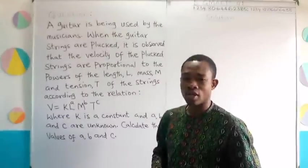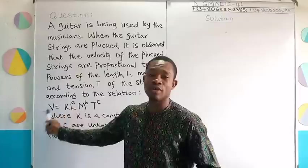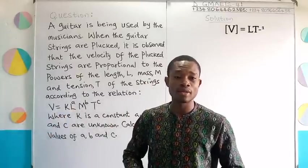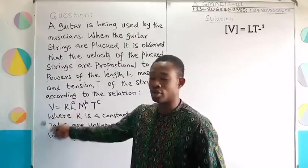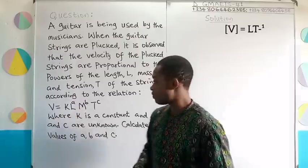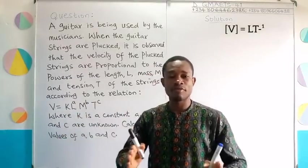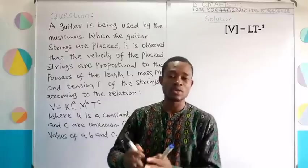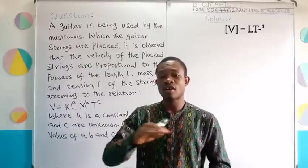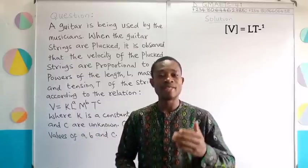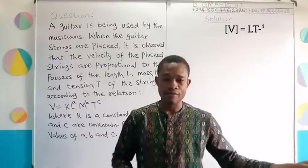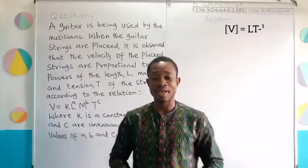So, I'm going to solve this quickly. This is velocity. The dimension of velocity is L T raised to the power minus 1. So, in place of this V, I'll put in that dimension of velocity. This K, we are going to drop it when doing the analysis. Take note of this, when you are solving works on dimensional analysis, any constant multiplier or constant addend, you keep it aside. You don't use it in your analysis.